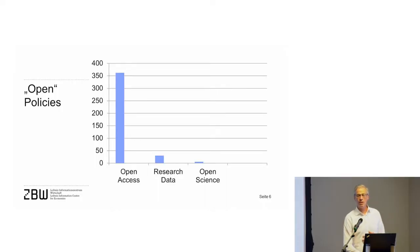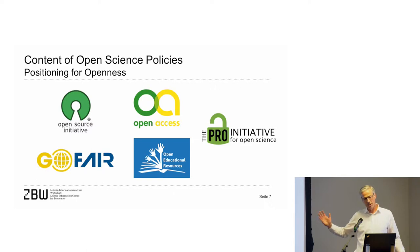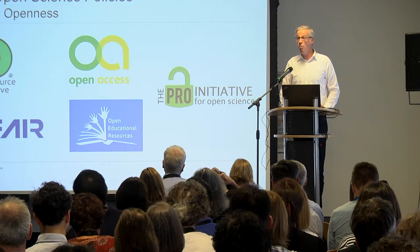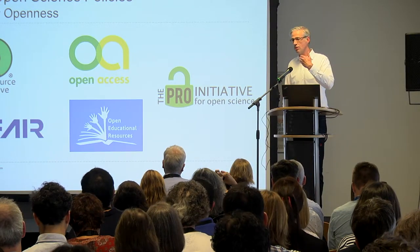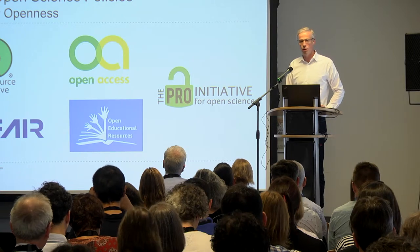So one recommendation to universities is certainly to develop your own open science policy. Such a policy could position your institution for openness — defining your position for open access, but also open source software. For example, in computer science, my field, the question often is: if we are in projects, what is the license for the software we are developing? Is it a GNU license? Is it a light GNU? A university or research institution could recommend how their staff should make software accessible and open.